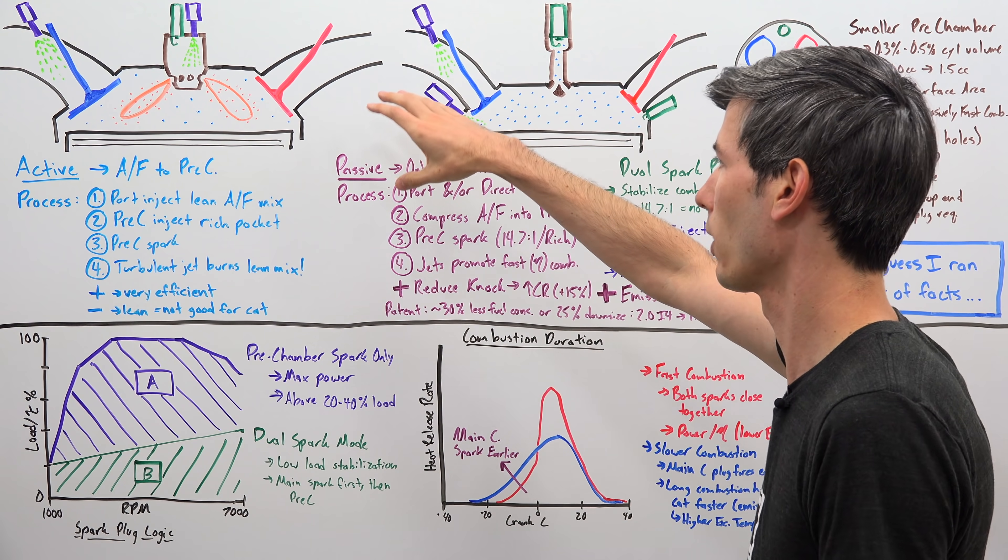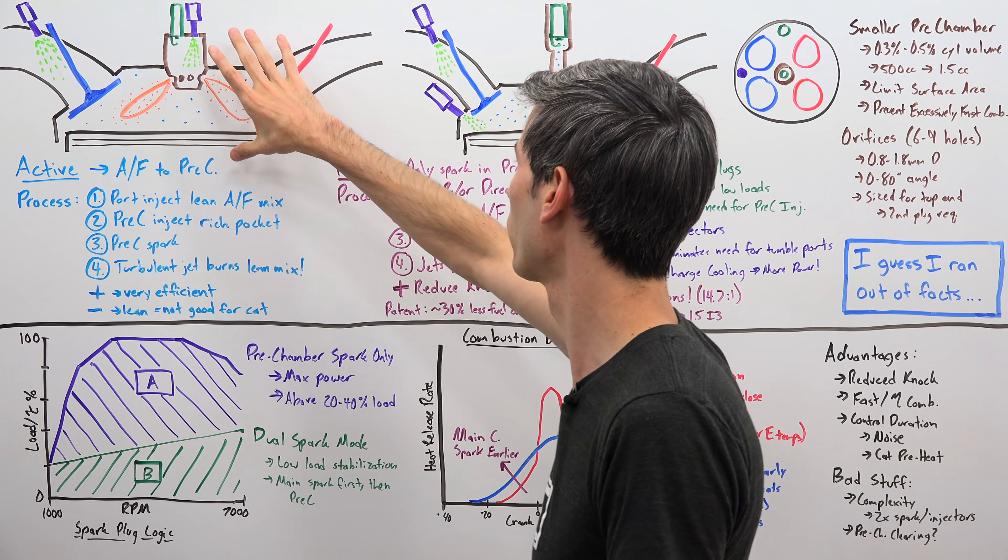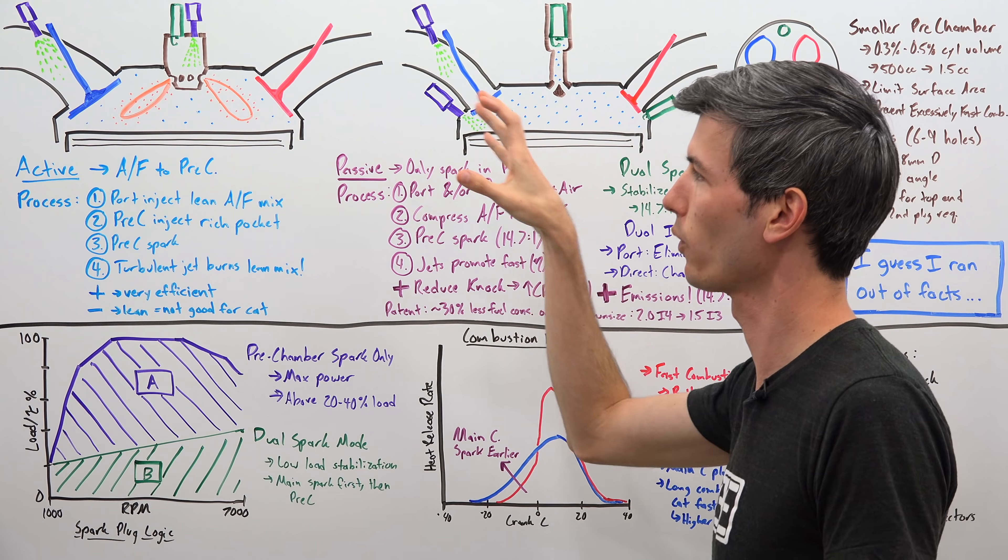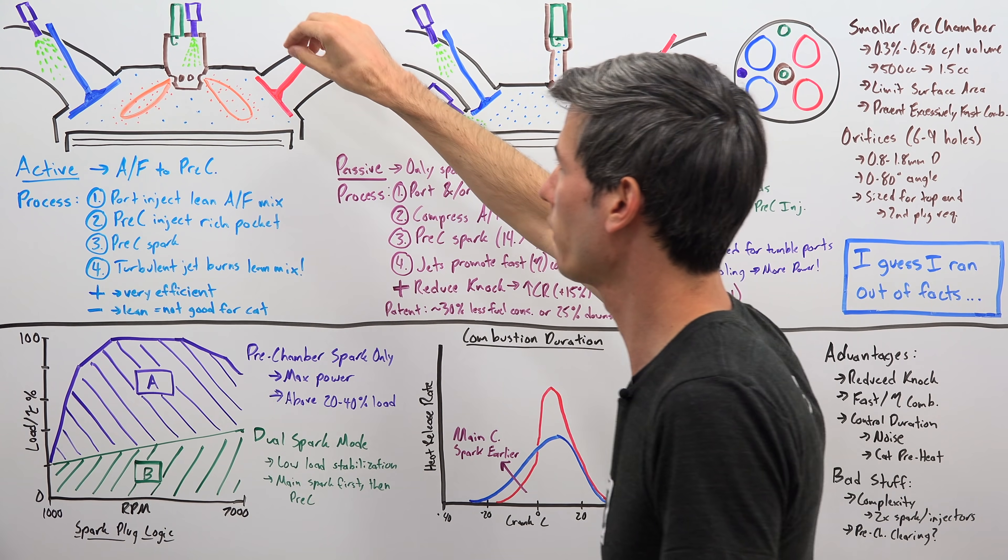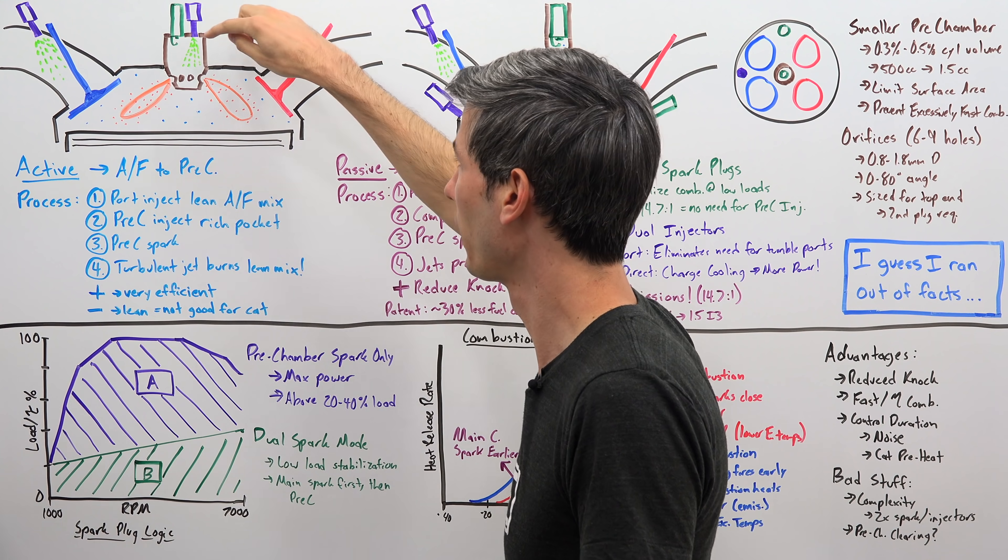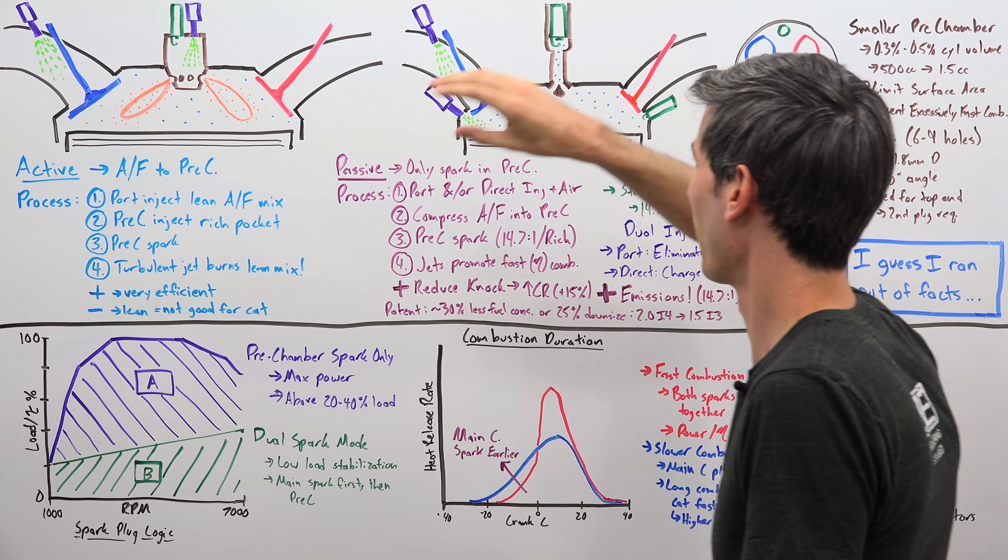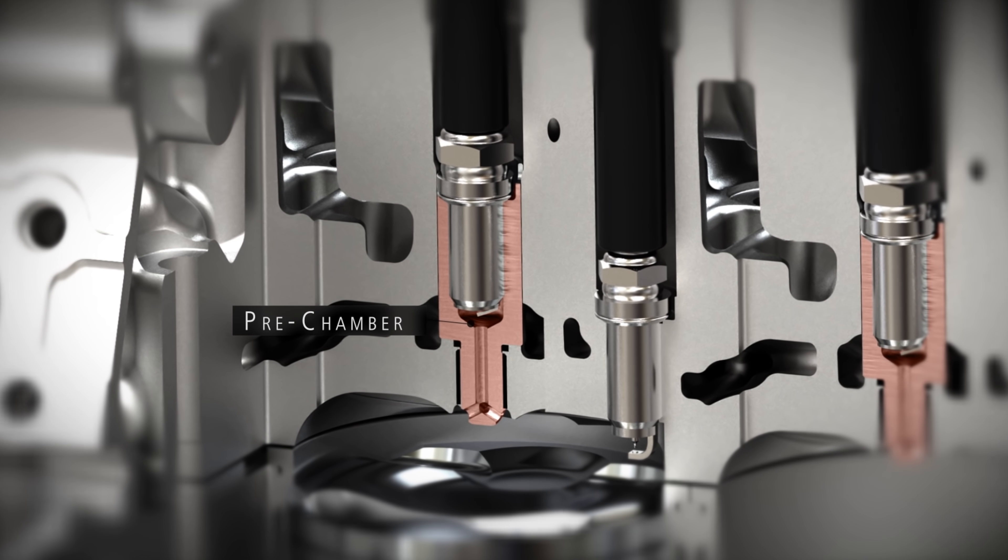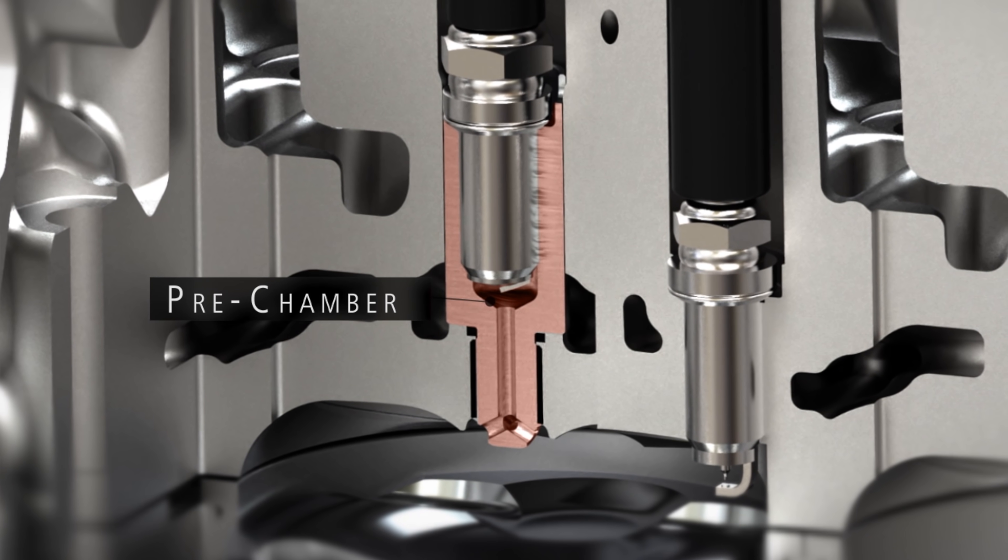So I don't know of any current production cars out there using pre-chamber combustion technology. However, there are engines out there which are using active pre-chambers, versus what Maserati is doing, using a passive pre-chamber. The main difference is the active chamber can either put in fuel, or air, or both, into the pre-chamber, and Maserati's system just has a spark plug with that pre-chamber, so it's not actively putting fuel or air into that chamber.